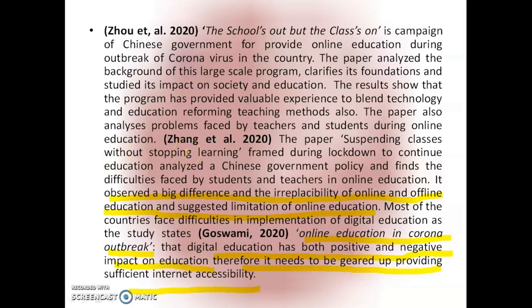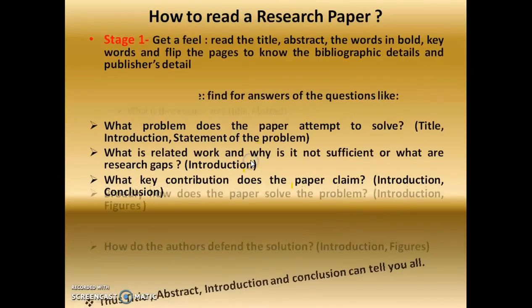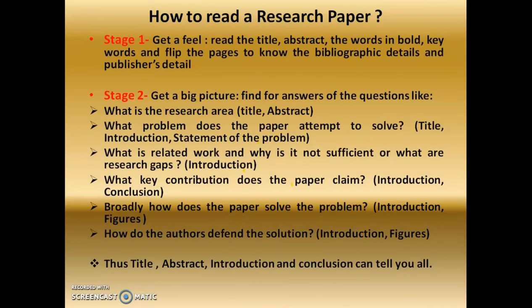Now let's study how to read a research paper. Reading a research paper requires a lot of cognitive work, so there are certain stages to follow to get the essence of a research paper. In Stage 1, you get a feel for the paper by reading the title, abstract, words in bold, keywords, flipping through pages, and reading the bibliographic and publisher details.